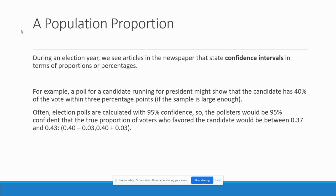That's how they do election night. You have to be careful watching the first part of the night because it may give you a result that doesn't hold up. Election polls are often calculated with a 95% confidence level, so the pollsters would be 95% confident that the true proportion of voters who favor the candidate would be between 0.37 and 0.43 — that is, between 37% and 43%.